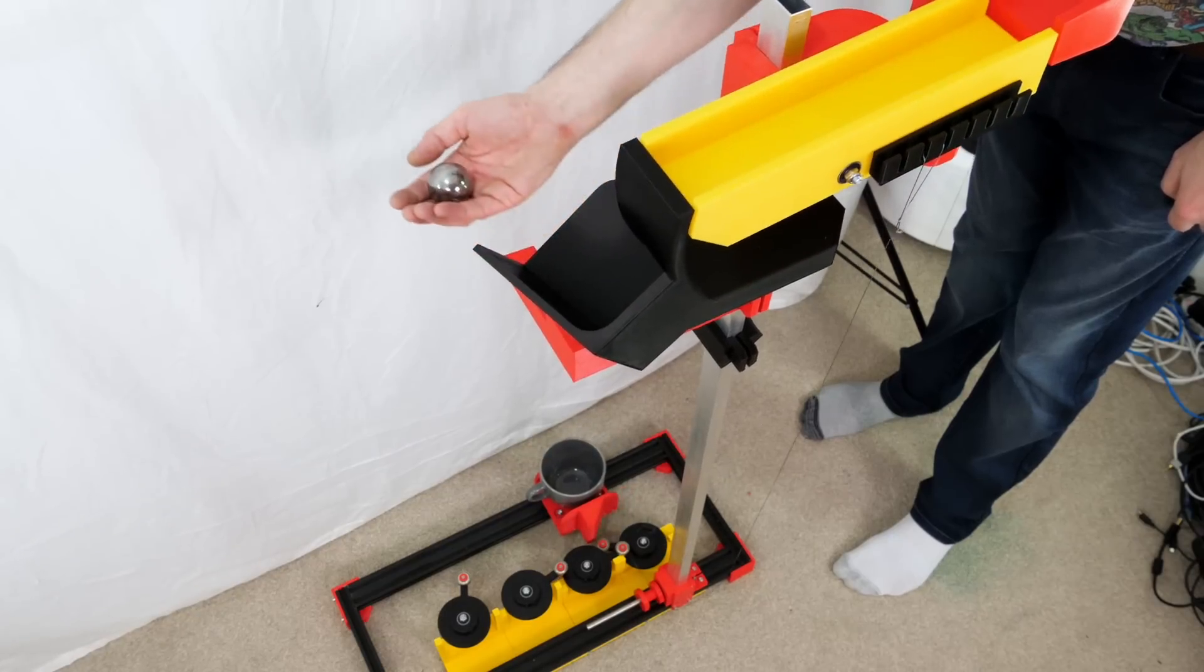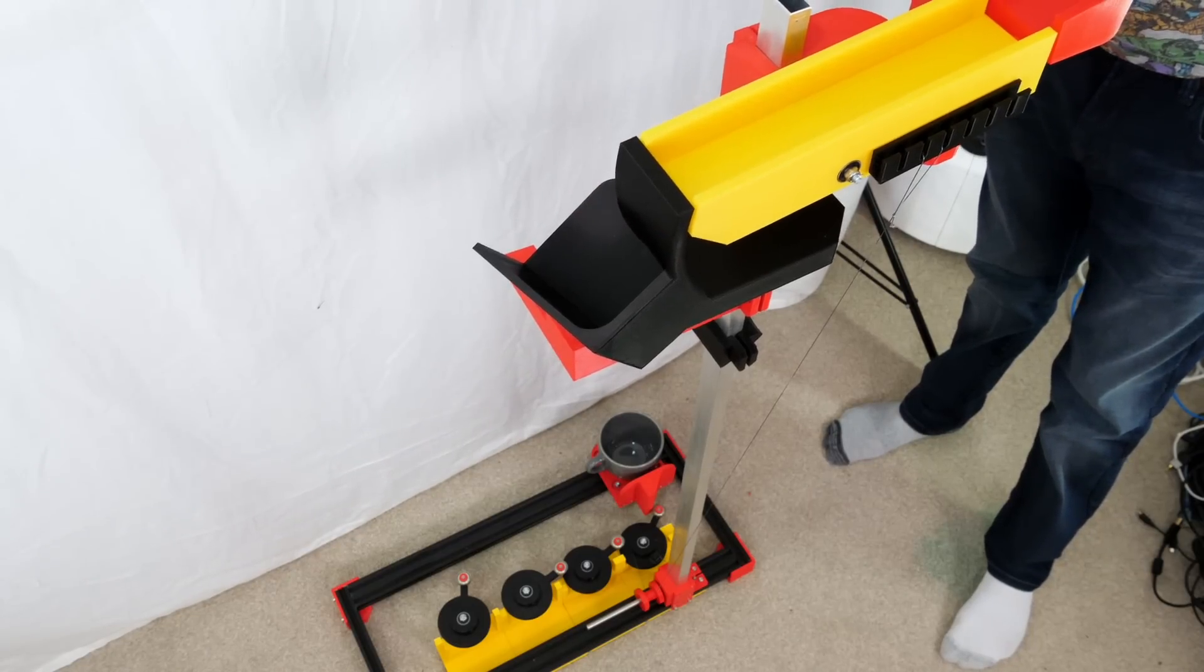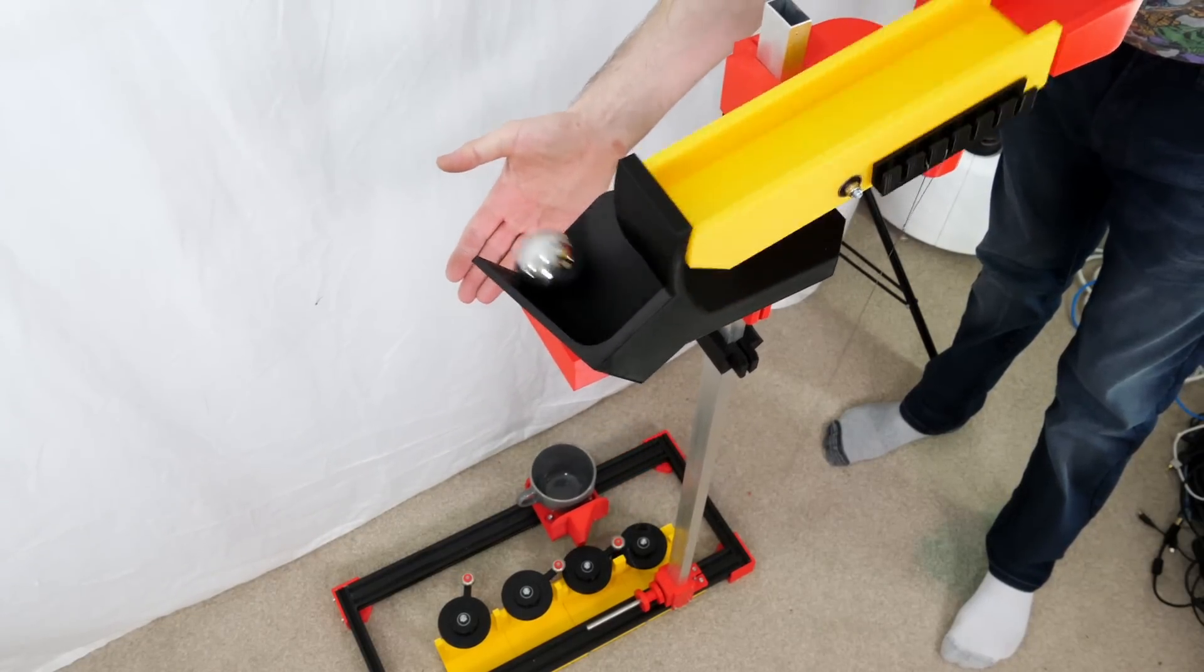It goes quite slowly but it pulls the cup along and it seems to work alright. Let's try a bigger ball bearing. This is 50 millimetres in diameter. Yeah that's much better.